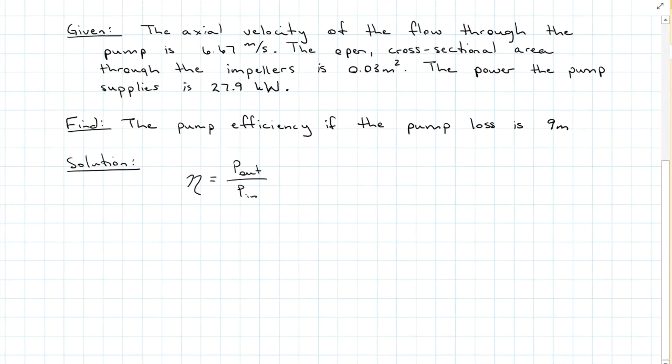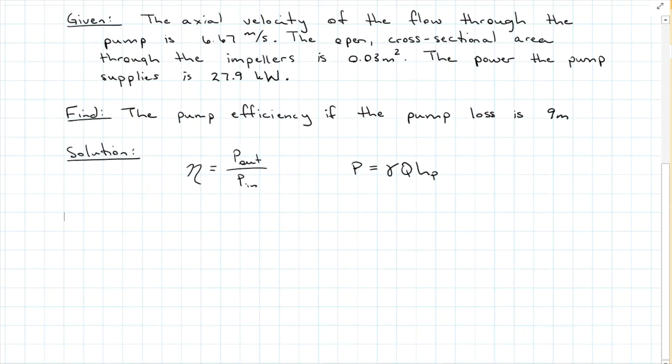Our efficiency equation is power out divided by power in, so we'll need our power equation, which is gamma Q and in this case hp, because we're dealing with the pump. Plugging the power equation into the efficiency equation, we have gamma Q and hp out divided by gamma Q and hp in.